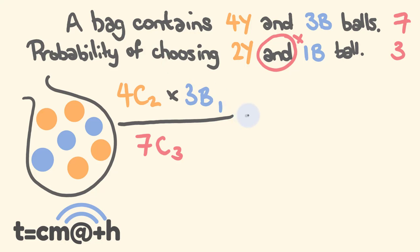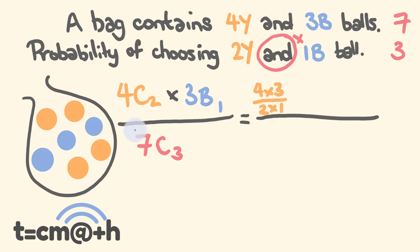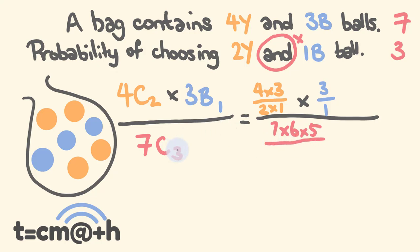So we can go through and solve this. 4C2 means four factorial coming out two times: 4×3 over 2×1. This is multiplied by 3C1 for the blue balls — that's 3 factorial coming out one time, which is just 3, over 1 factorial. The total outcomes: 7C3 is 7 factorial coming out three times, so 7×6×5, all over 3 factorial, which is 3×2×1.